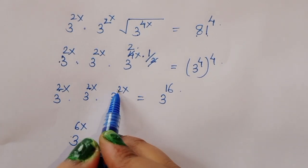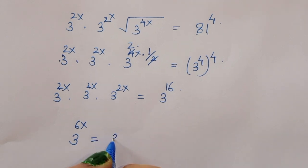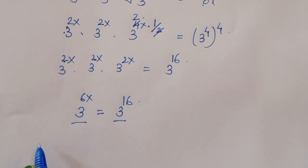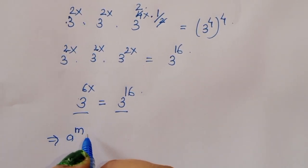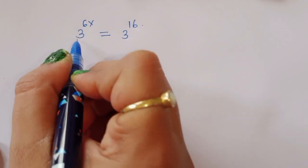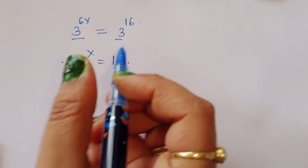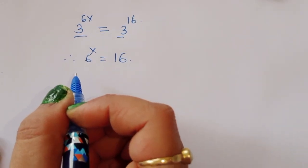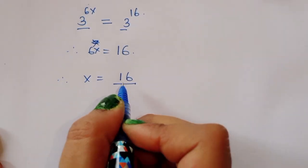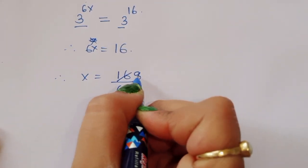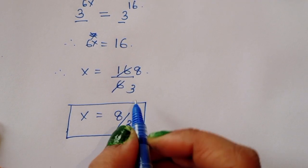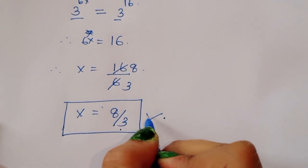Adding the exponents: 2 plus 2 plus 2 gives 6, so 3 power 6x equals 3 power 16. Since the bases are the same, using the formula a power m equals a power n means m equals n, so 6x equals 16. Therefore x equals 16 divided by 6, which simplifies to x equals 8 by 3. From method 2 we also got the same value: x equals 8 by 3. This is the solution, thank you.